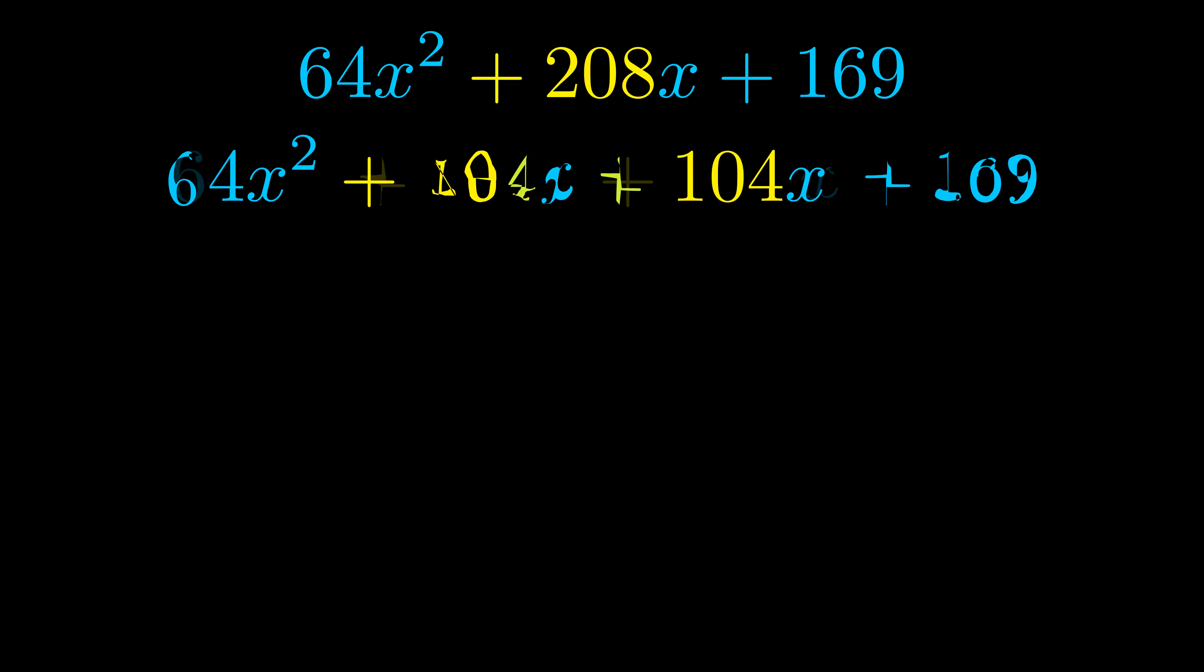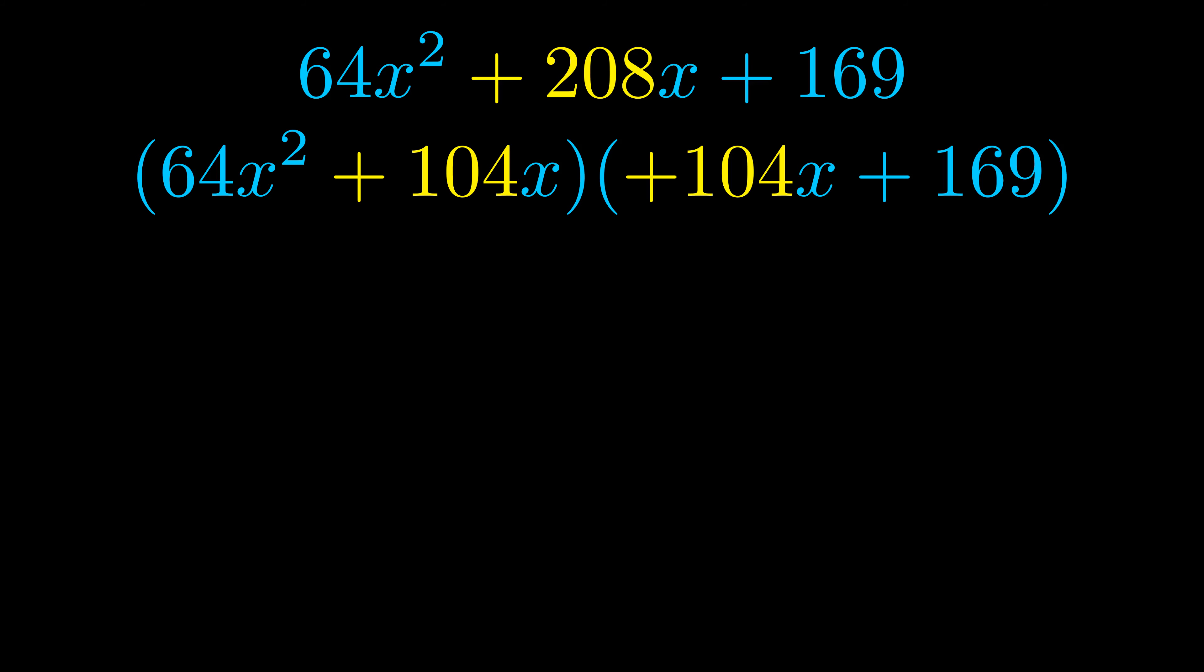Once we've done this we go ahead and we put parentheses around the first term and the last term. And we do that so that we can take the greatest common factor out of both terms. We can see the greatest common factor is now outside in green.